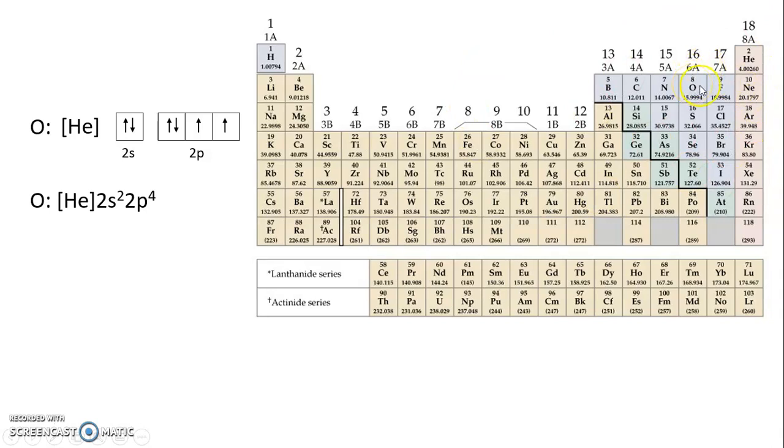and that, according to the nearest noble gas rule, is what we would expect. It's two columns away from the noble gases, so that means we need to get minus two.